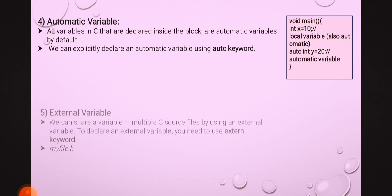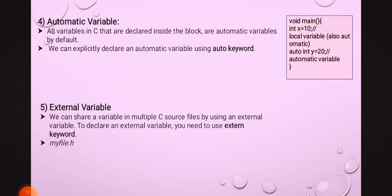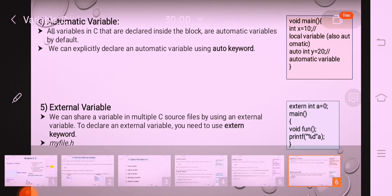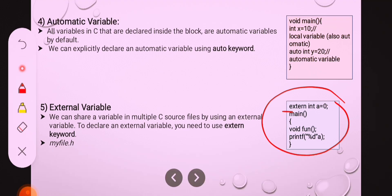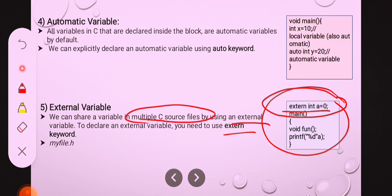The last type is the external variable. extern is also a keyword. This variable can be accessed in multiple C source files and is declared using the extern keyword. We can access it anywhere in multiple C source files, so it is called an external variable.